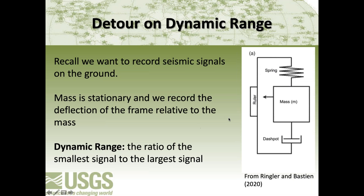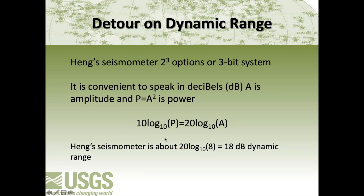Based on this principle, it's useful to introduce the term dynamic range. The dynamic range is the ratio of the smallest signal — the etchings of the ruler we could resolve — to the largest signal, the peak-to-peak motion of the frame relative to the mass. Going back to the Hang seismometer, we said there were two-to-the-three options, roughly eight dragons, so we call it a three-bit system.